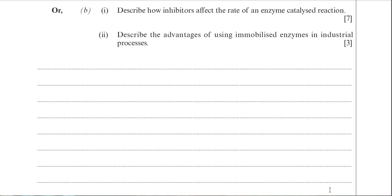Let's move on to part two: the advantages of using immobilised enzymes in industrial processes. This part is worth 3 marks. Some advantages: they are more stable at higher temperatures; they can withstand greater ranges of pH; the enzymes can be reused; you can put several different enzymes together to create different products; and the product you're making isn't contaminated by the enzyme because it's immobilised, probably in a gel bead. There are more advantages listed in the notes in the app.